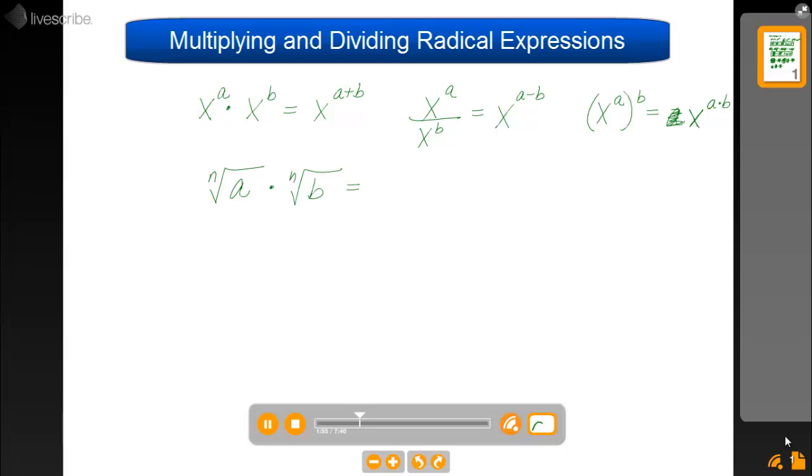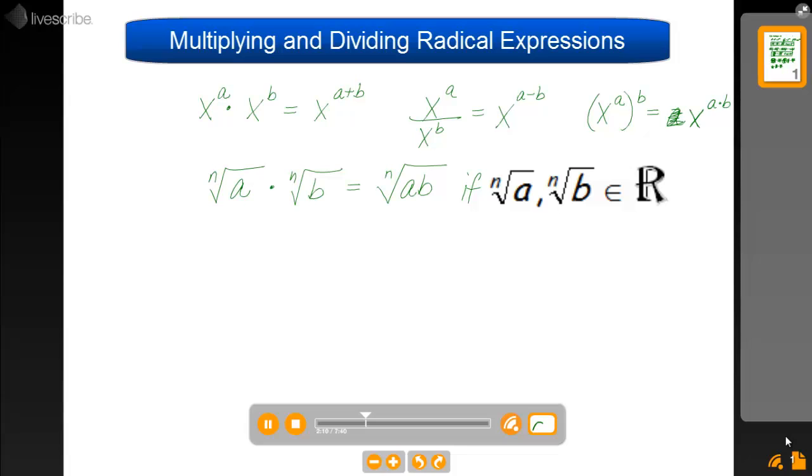you are allowed to combine those into one root, so I'm going to make that the nth root of a times b, but that's only allowed if the nth root of a and the nth root of b are real numbers, so you have to be very careful with that.